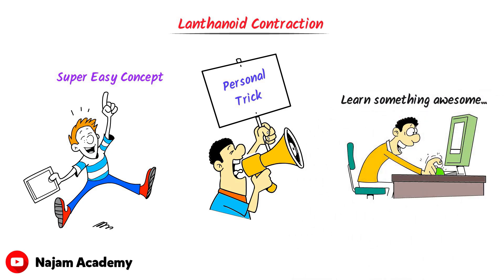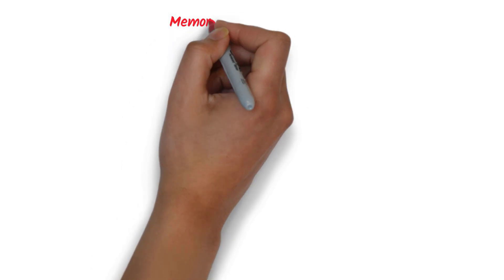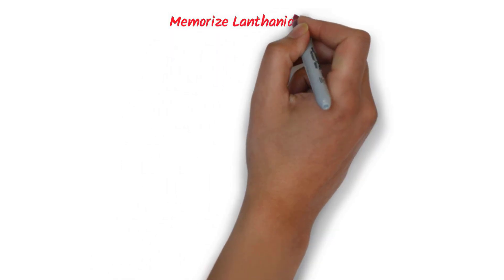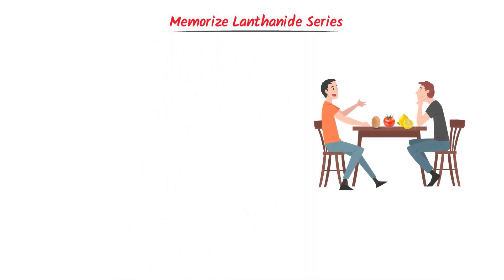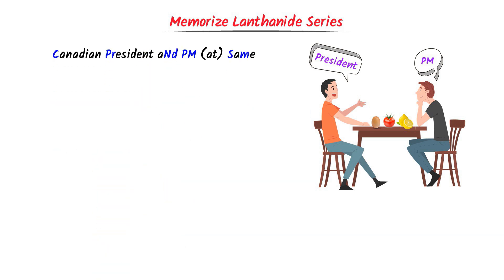Firstly, let me teach you my personal trick to memorize the Lanthanide series. For example, consider the President and Prime Minister of Canada sitting at a table. I say: Canadian President and Prime Minister at same European golden table.